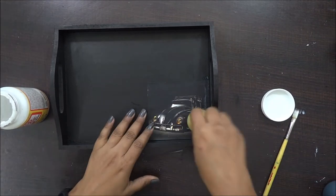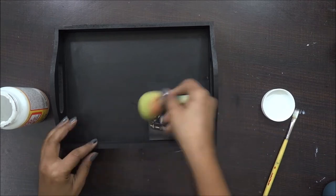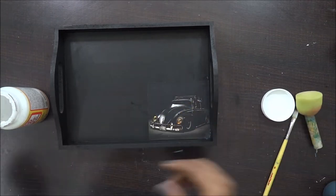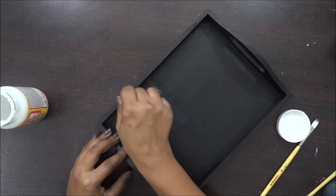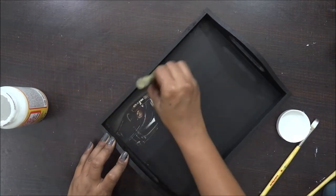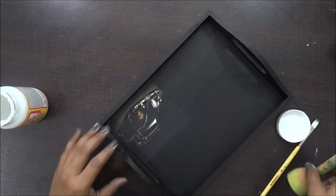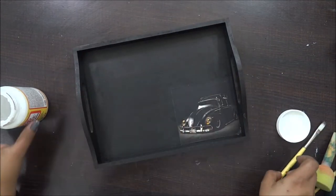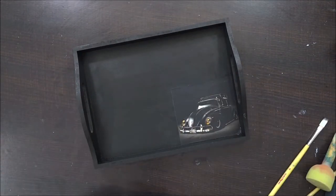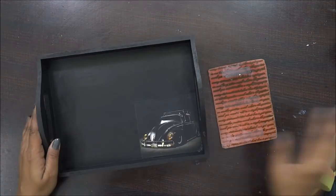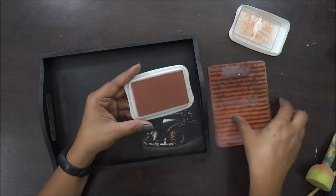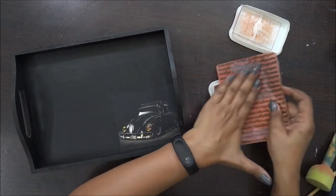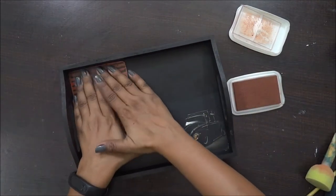Once I am done with applying Mod Podge I am going to stick it on my tray and first I am going to use my brush, my finger and then finally I will go back to my sponge dabber of course. That is something which I always love for sticking my papers or just when you have to give some soft press to your base then that works perfectly. With my sponge dabber I am going to press my paper and I am going to make sure that it seals really well on my tray.